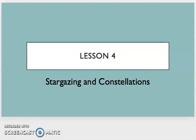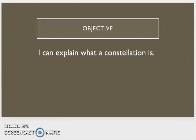This is lesson four in our Domain Six Astronomy Unit. The title of this lesson is Stargazing and Constellations. At the end of this unit, you're going to be able to explain what a constellation is. And like always, before we get started, there are some vocabulary words you will need to know while you listen to this reading.